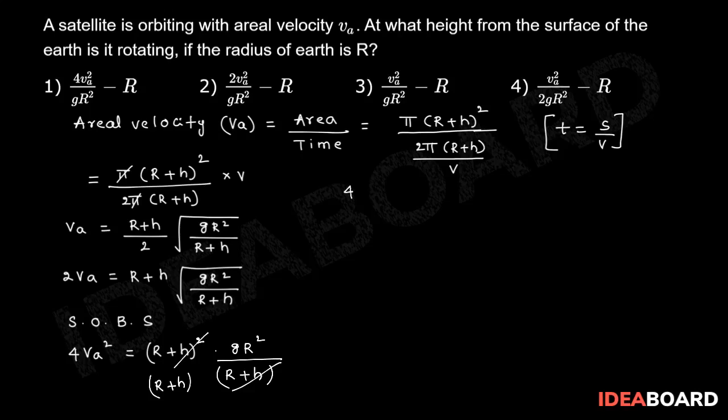So squaring on both sides, this is 4 Va square equals r plus h into gr square.